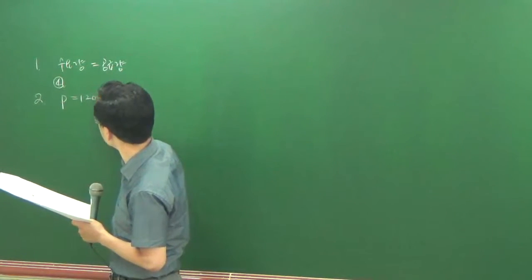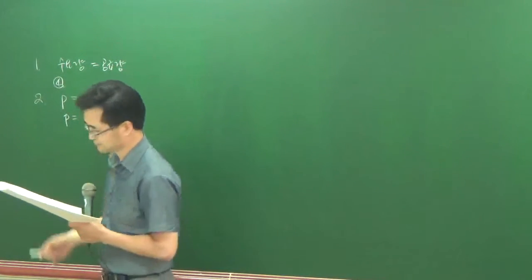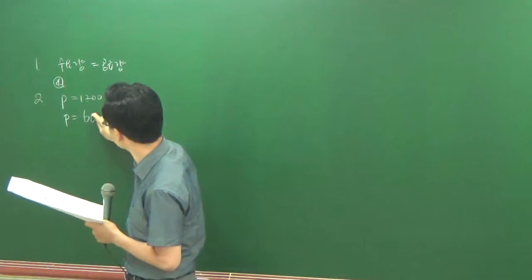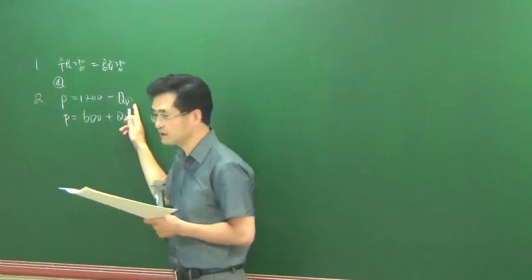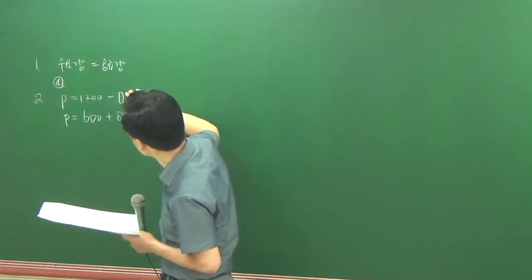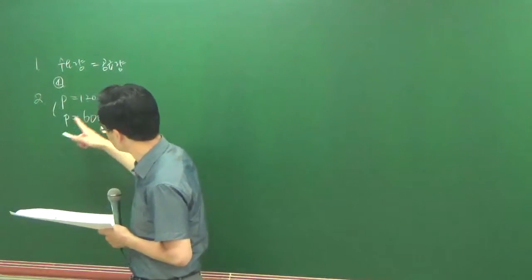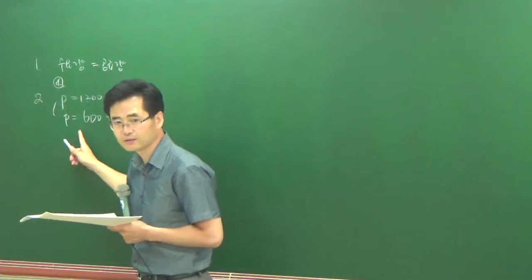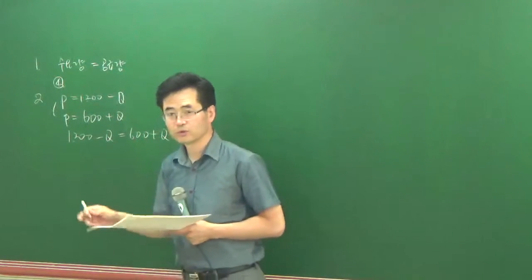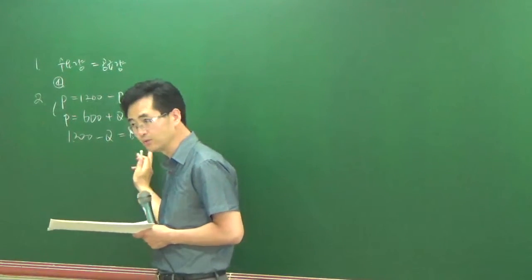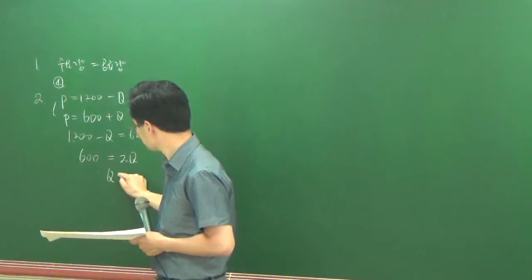P는 1200-QD고요. 600 플러스 QS는 공급이죠. 균형 상태에서는 D와 S가 똑같아요. D가 수요고 이게 공급인데 균형 상태에서는 같기 때문에 이거를 이걸로 놓으면 되잖아요. 1200-Q나 600 플러스 Q가 모두 P잖아요. 그러니까 1200-Q 이꼴 600 플러스 Q 이렇게 놓으면 되잖아요. 숫자는 숫자끼리 문자는 문자끼리 모으면 Q는 300이죠.